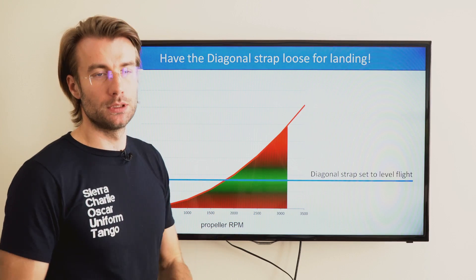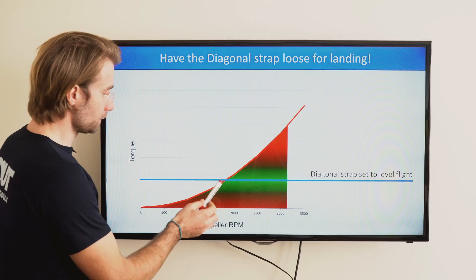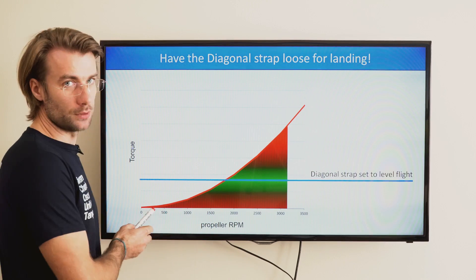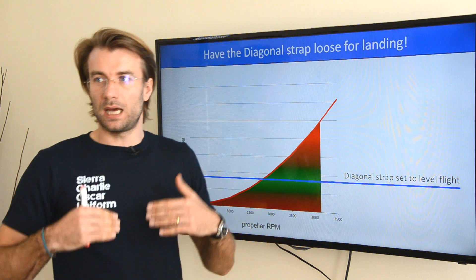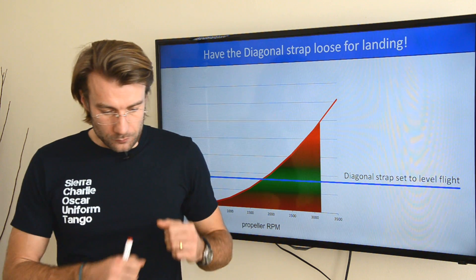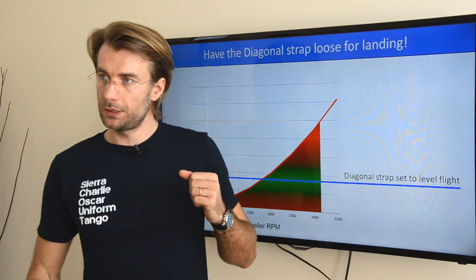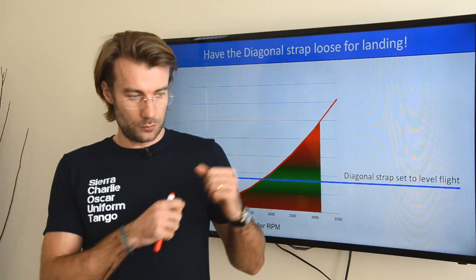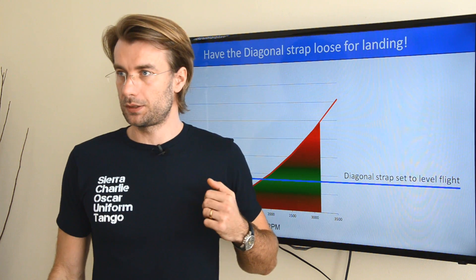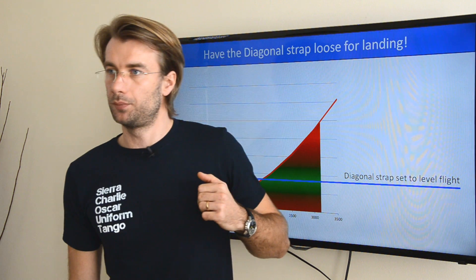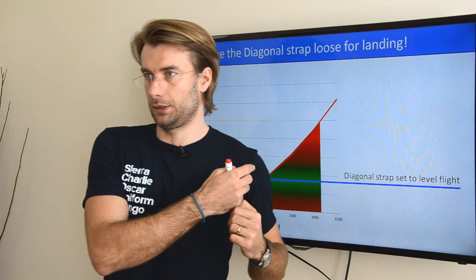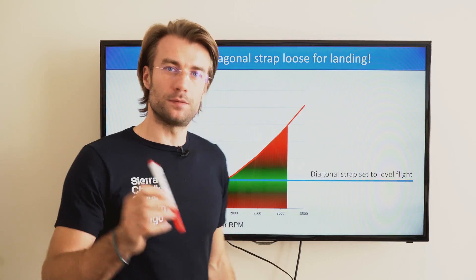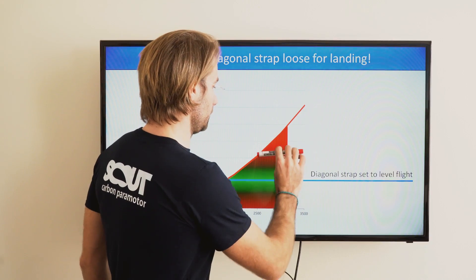By releasing the throttle, the torque got to zero because the prop has no power. Secondly, by getting out of the harness I applied a lot more tension onto the diagonal strap because I straightened up my body and my leg kept pulling the left riser down, effectively weight shifting to the left. So the weight shift effect of the diagonal strap even increased.